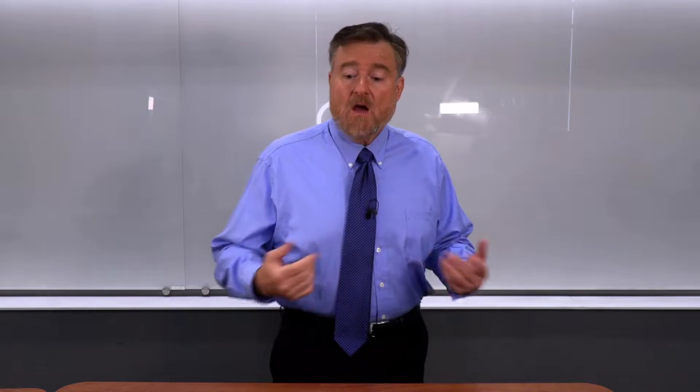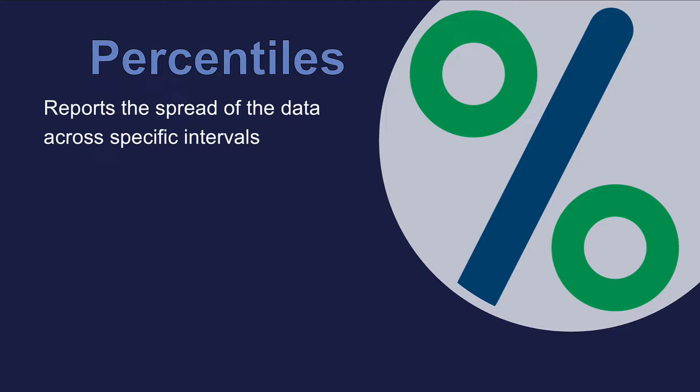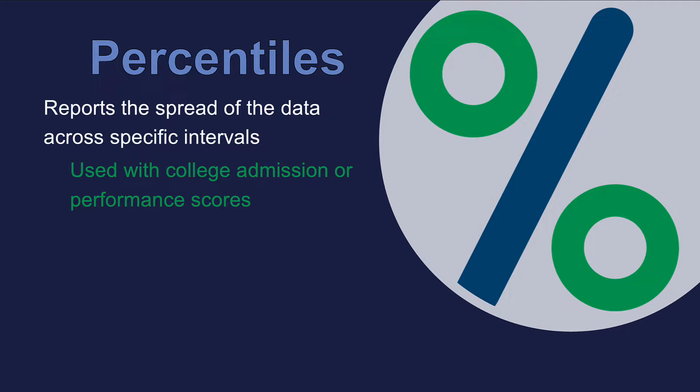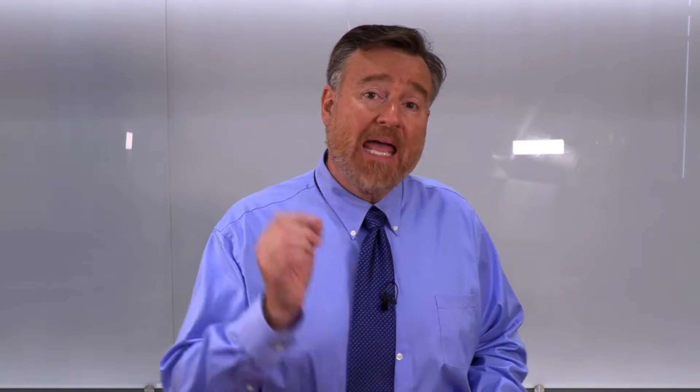Let's begin with percentiles. Percentiles report the spread of the data across specific intervals, and they're often used with college admission scores or other performance scores. We might report that on the admissions test you took for getting into college, you scored at the 89th percentile, meaning you scored higher than 89 percent of the people who also took this test. It doesn't mean you got 89 percent of the questions correct — it's only comparing you to others who took the same test.